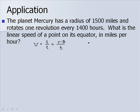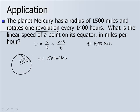We know that t is 1,400 hours, so what we need to find is r times theta. Here's our planet Mercury with a radius of 1,500 miles, so r, in this case, is 1,500 miles. We need to find what theta is. Well, one revolution is what we're talking about. It makes one revolution every 1,400 hours, and one time around the circle would give us a measure of 2π radians.